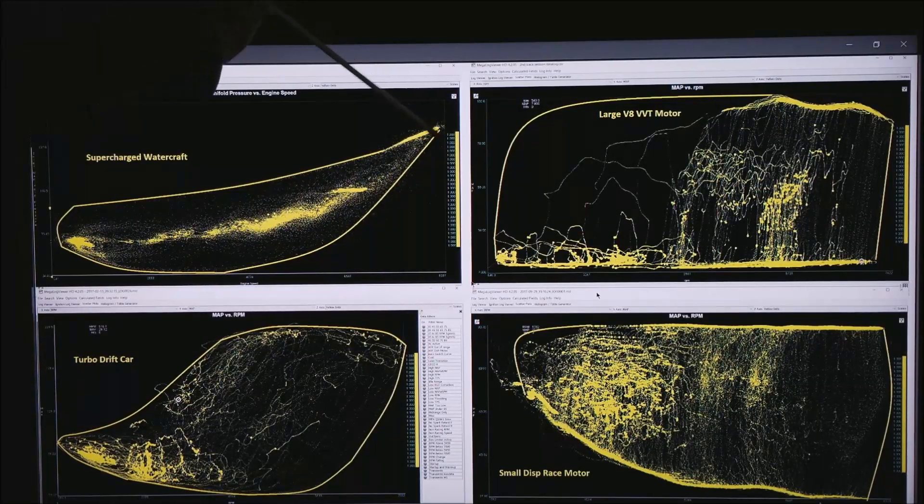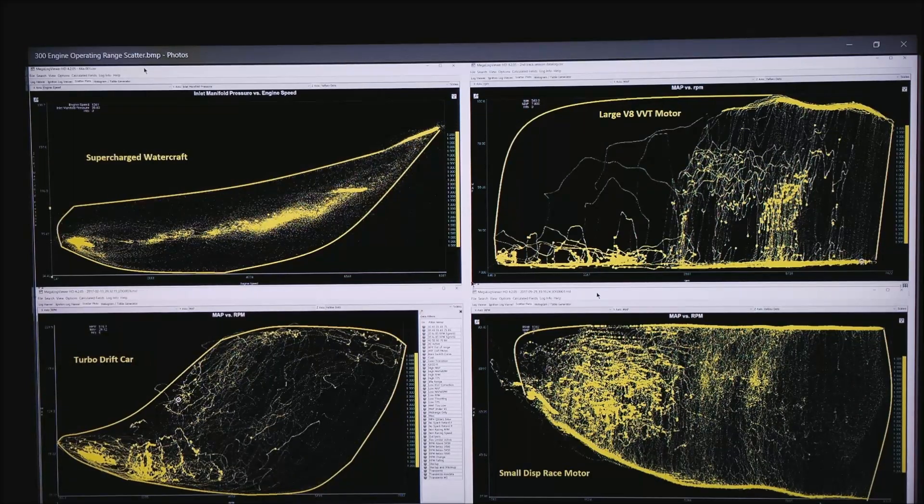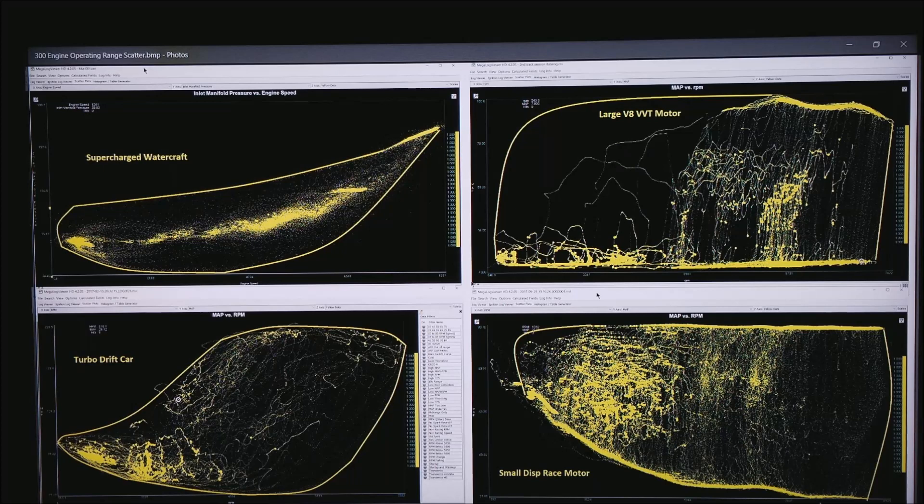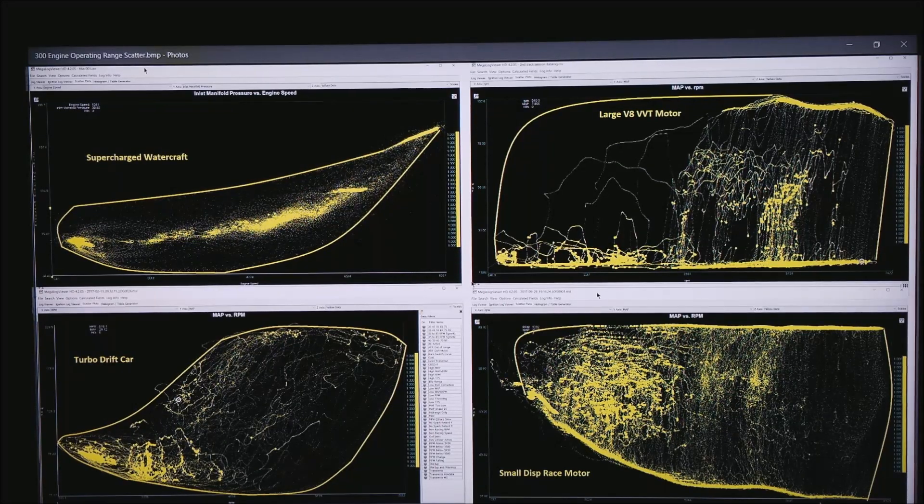But at full throttle we get here. I'm not sure you can see it in this resolution but there are a few dots out here. So again that's where you would want to estimate your VE but you almost never get there.